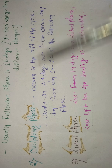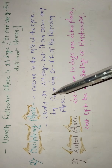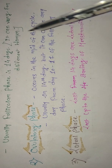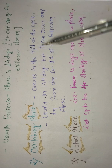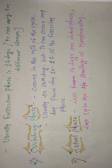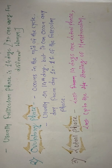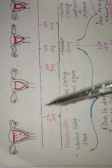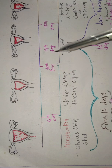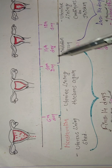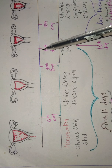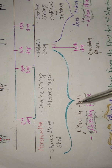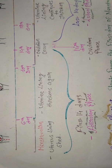The ovulatory phase occurs in the middle of the cycle, usually on the 14th day, but it can occur anywhere from day 10 to day 17. Importantly, ovulation occurs during the follicular phase, not the luteal phase. Menstruation occurs, the endometrium sheds and reforms, then ovulation occurs on the 14th day — the midpoint of the cycle.